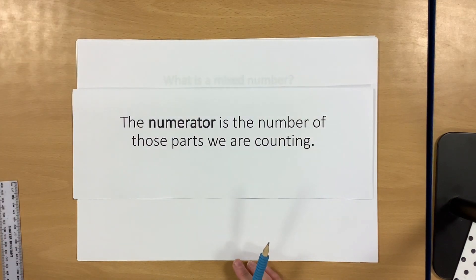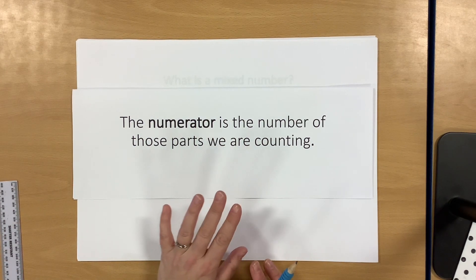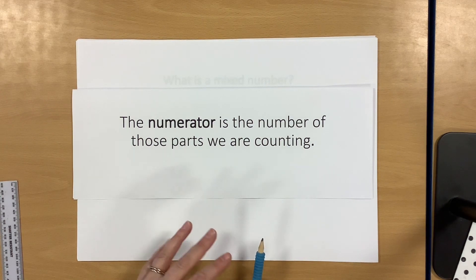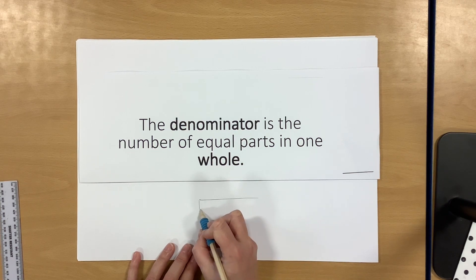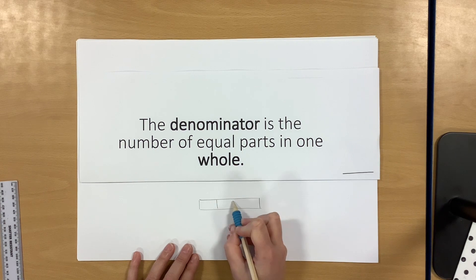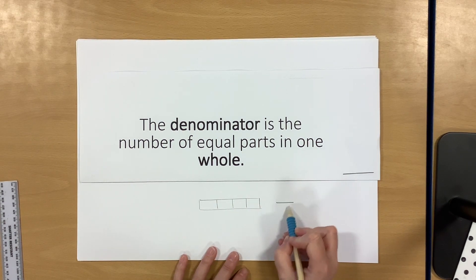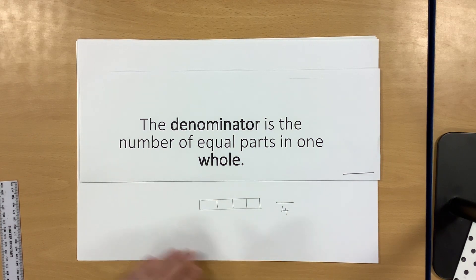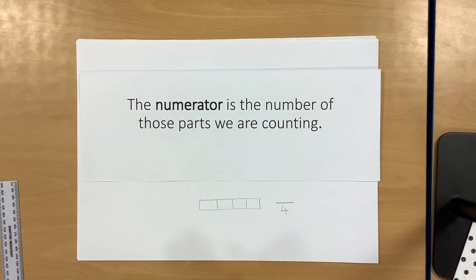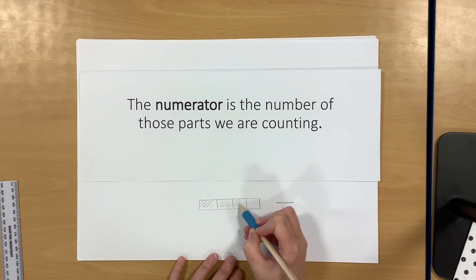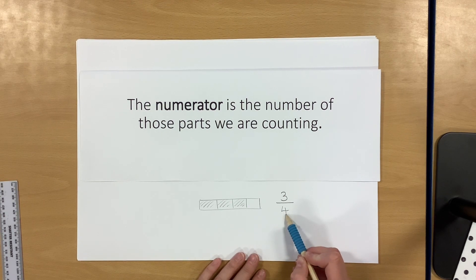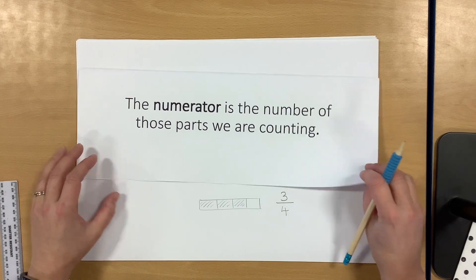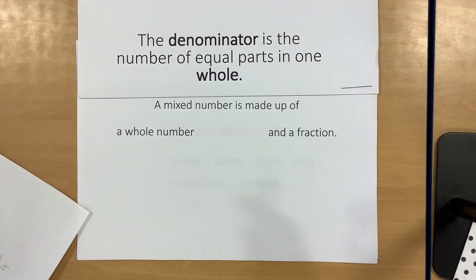So we're going to recap on what that means. The numerator is the number of parts we are counting. Although the numerator is the top number, it's the denominator which is the most important to start with. The denominator is the number of equal parts in one whole. So if I had one whole chocolate bar and that chocolate bar is cut into four equal parts, the denominator is going to be four. If I ate three of those four equal parts, my numerator would be three. When we're talking about mixed numbers and later on improper fractions, it's the denominator we really need to be 100% sure we understand.